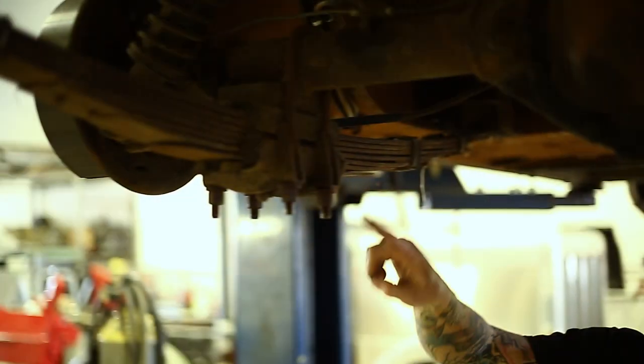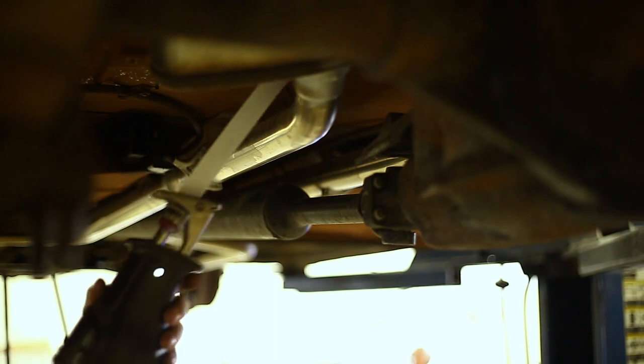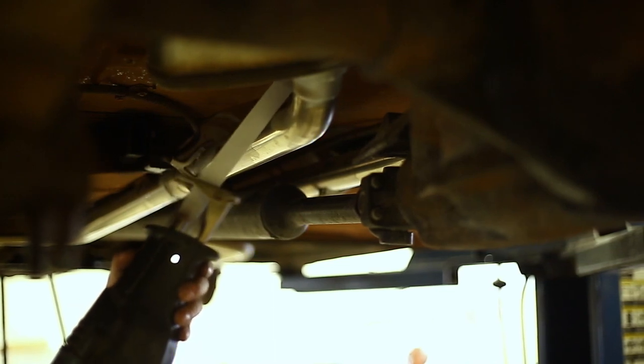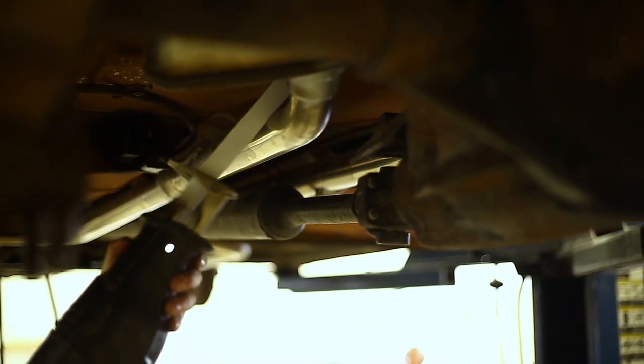You'll need to remove the front hanger bolts, rear hanger bolts, and U-bolts. The exhaust will need to be removed from the rear seats back to make clearance for the new crossmember.